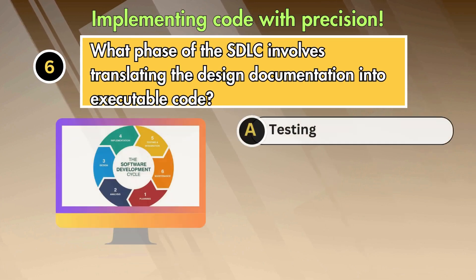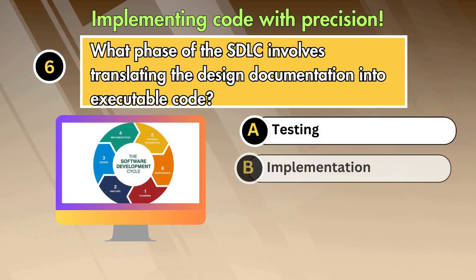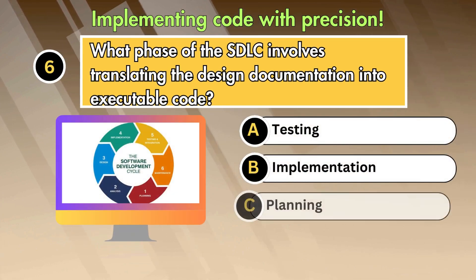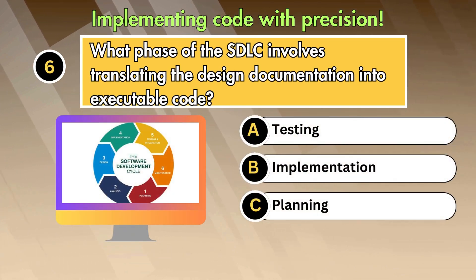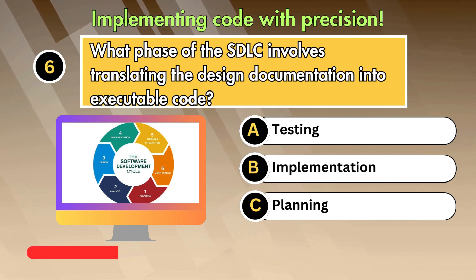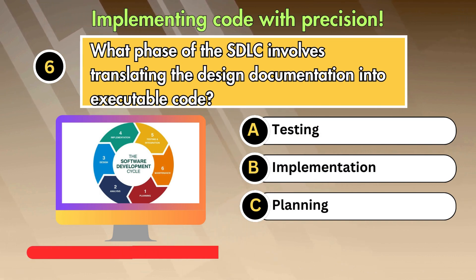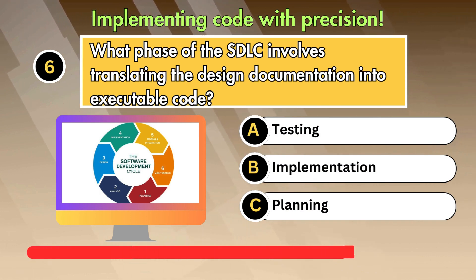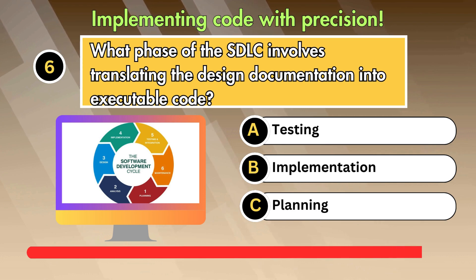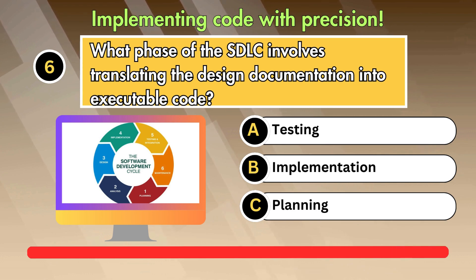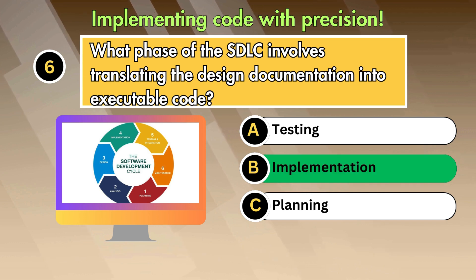What phase of the SDLC involves translating the design documentation into executable code? Option 1: Implementation. Option 2: Testing. Option 3: Planning. Answer is Implementation.